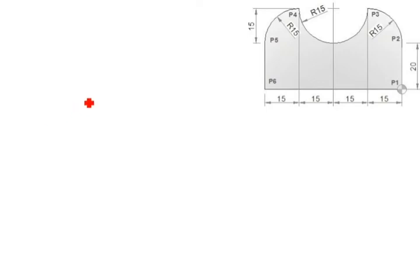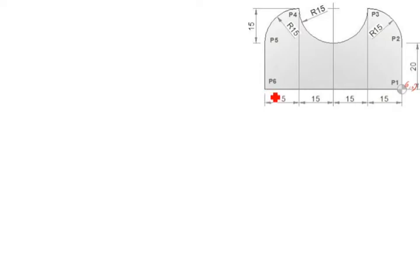Welcome to my channel. Today we are going to learn milling program. In this drawing you have to see here — the starting point is given here. You see P1 is the starting point, that indication shows here. So this is 0,0. Instead of P1, the starting point is P6 — you have to start the program from here. Now we have to start the program from P1.